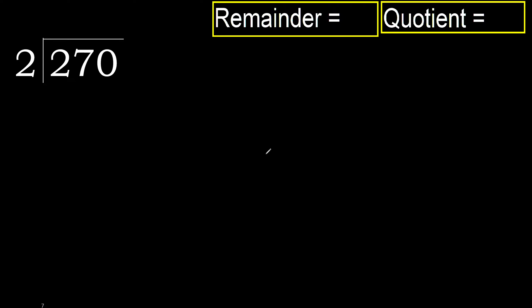270 divided by 2. 2 is not — let's therefore start with 2. 2 multiplied by which number is nearest to 2, but not greater?